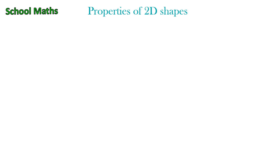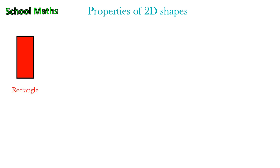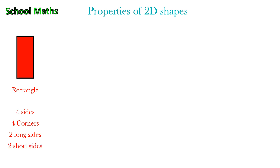The first one is rectangle. Rectangle has four sides, four corners, two long sides and two short sides.